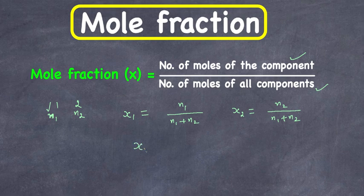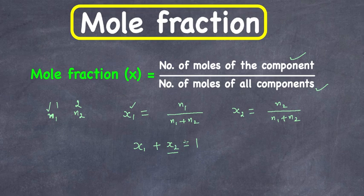x1 plus x2 is equal to 1. So if you calculate the mole fraction of one component and subtract it from 1, you get the mole fraction of the second component. Another important property is that mole fraction is independent of temperature and it is unitless — no units for mole fraction.